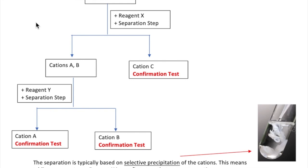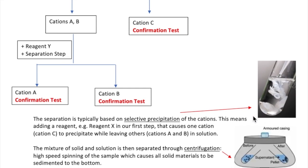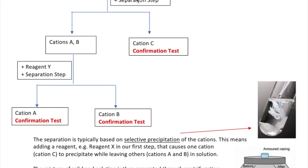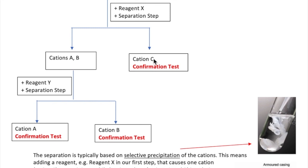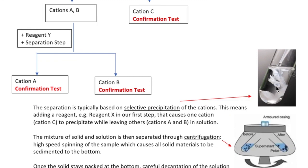This is typically done by adding reagent that will selectively precipitate one of the cations. So in our scheme, reagent X, which precipitates cation C while leaving cations A and B in solution, is that reagent. In this picture, the cloudiness in the test tube is due to the formation of the solid as reagent X is added.